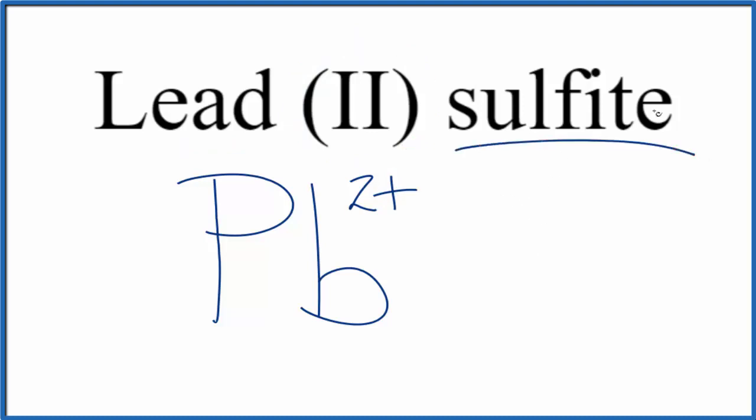For the sulfite ion, you're not going to find ITE on the periodic table. This is a polyatomic ion. So you've either memorized that the sulfite ion is SO3, and the whole thing has a 2- ionic charge, or if you're allowed, you can look that up on a table of polyatomic ions.